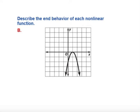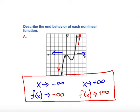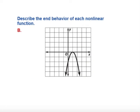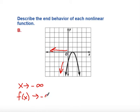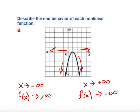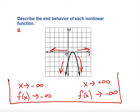We have one more graph. This is also a polynomial function, but notice the difference: the previous function was ending in different directions, while this function is ending in the same direction. As we move to the left, as x approaches negative infinity, my function is going down. And as we approach positive infinity to the right, my function is also going down. So in this case, both ends are approaching negative infinity. That's the end behavior.